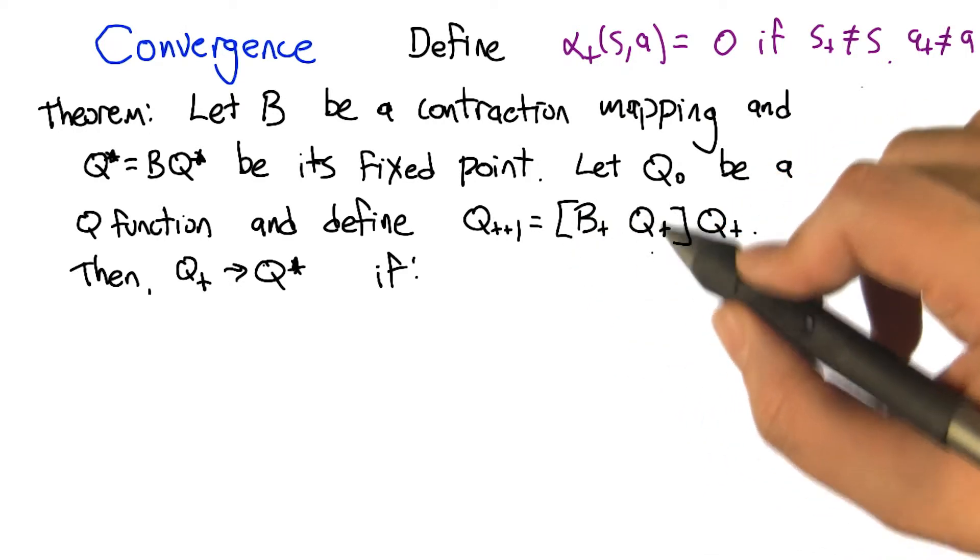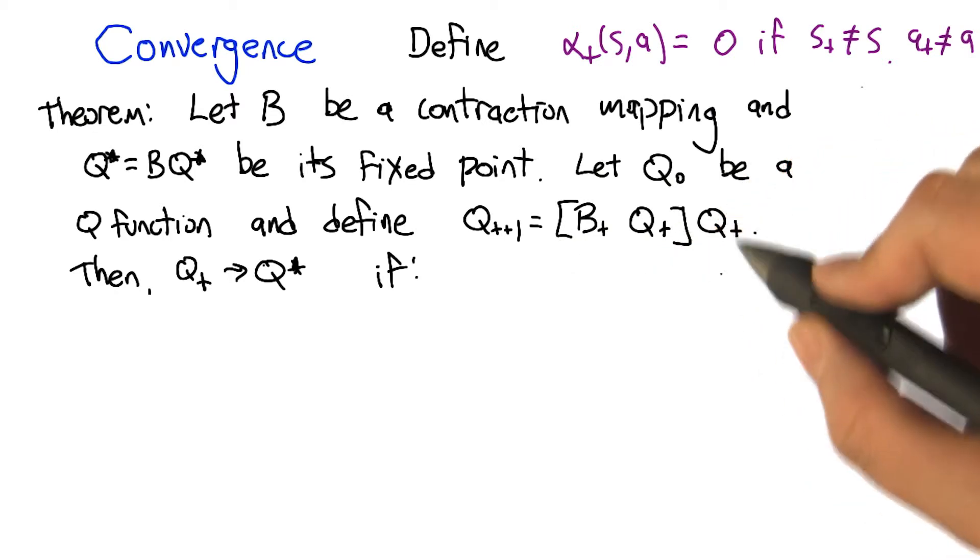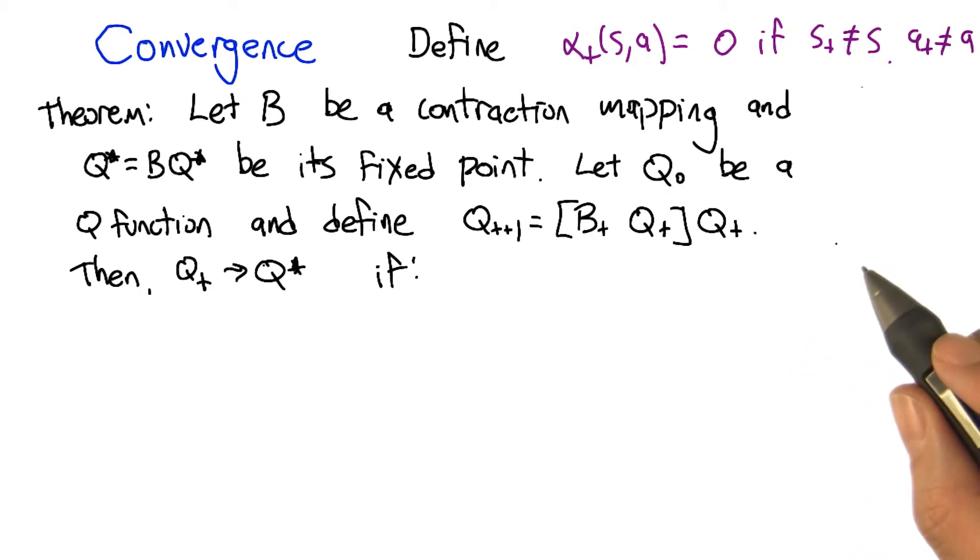B_T is going to be applied to Q_T, producing an operator that we then apply to Q_T, and that's what we assign Q_{T+1} to be. So in the context of Q-learning,